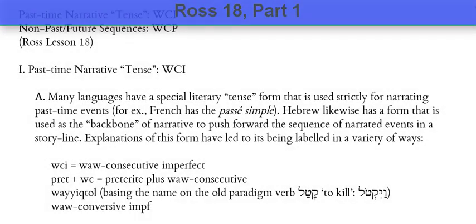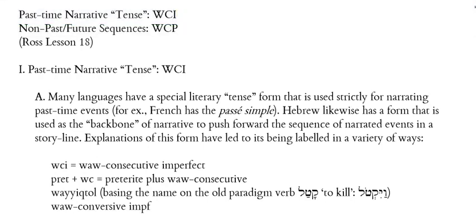Ross Lesson 18 is entitled 'Uses of the Tenses in Sequence.' We're dealing here with how in Hebrew you either tell a story from the perspective of what happened in the past through a series of events, or how you can tell somebody what's going to happen or give someone a set of instructions for what they will do in the future. These are called sequences of clauses, where one clause follows upon another with a sort of continuity between them.